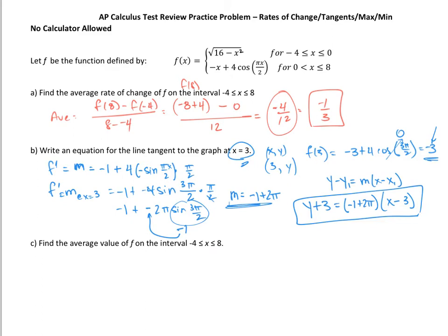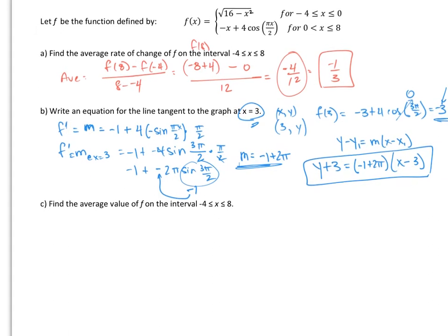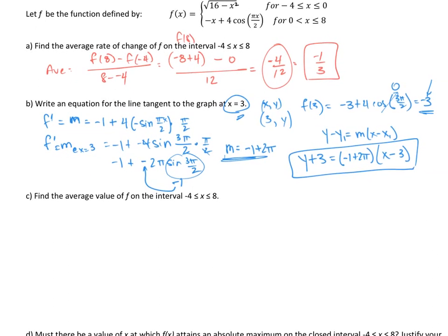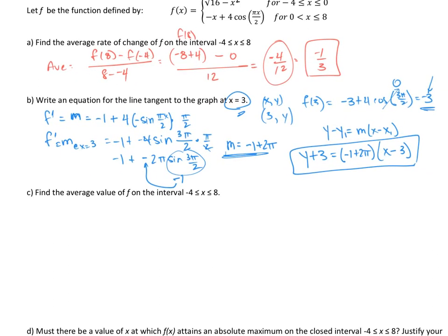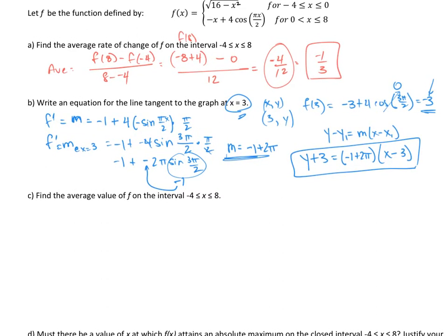Alright, next problem. So we have to find the average value on the interval from negative 4 to 8. I'm going to slide this up just a teeny bit like that, just enough so I can see the top over there, the equation still. And here we go. Let's use another color here and find the average value of f on the interval. So how do we do average value? We know that it's 1 over b minus a from the integral from a to b. In this case, we're going to have 1 over 8 minus negative 4, the integral from negative 4 to 8 of f of x dx.